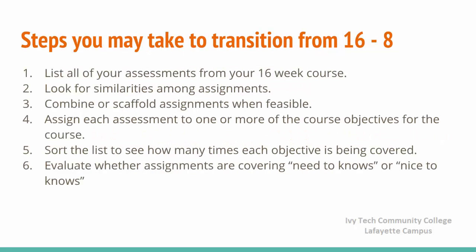Here are some steps you can take to begin the transition. First, list all of the assessments from your 16-week course and look through them to find similarities and overlap. Are there any assignments that can be combined or scaffolded? Next, begin assigning each assessment to one or more of the course objectives from the COR. Sort through and determine if all of the objectives are being covered and if some are being covered more than is necessary. Last, evaluate whether each assignment is covering something necessary for meeting the course objectives or if the assignment is supplemental.